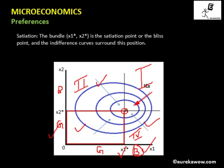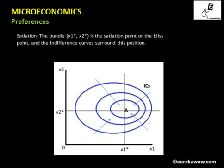For all four quadrants, the direction of increasing utility is represented in the diagram. Point A is the satiation point or bliss point — it is the point which gives the maximum level of satisfaction to the consumer. All the bundles lying around point A give less satisfaction compared to point A itself.